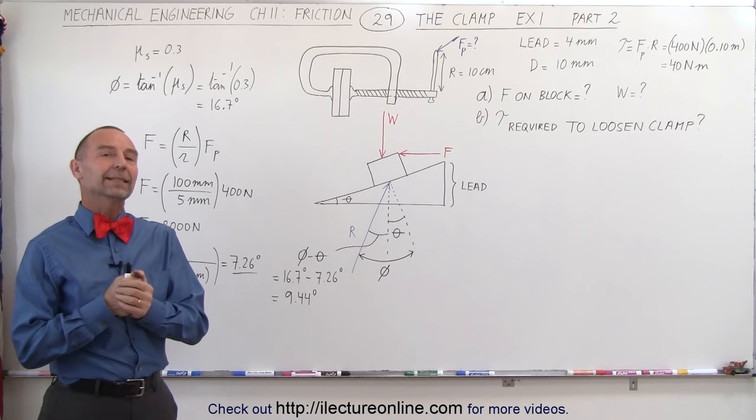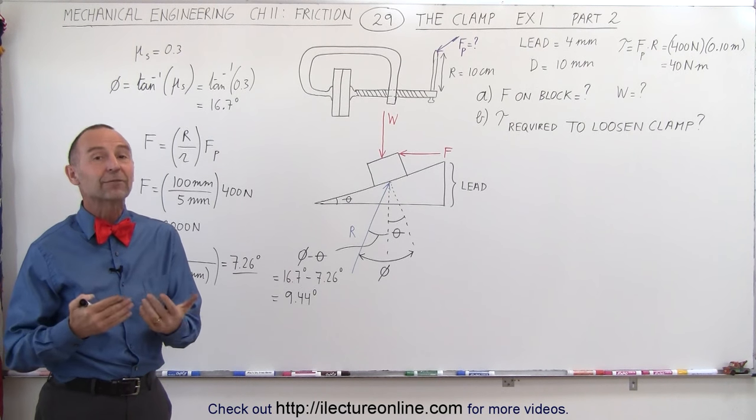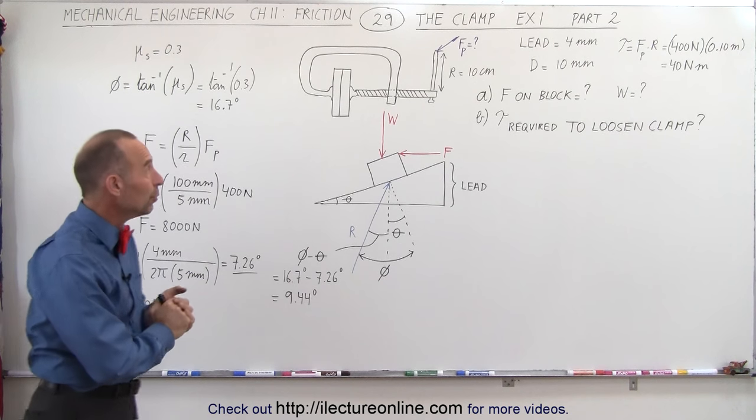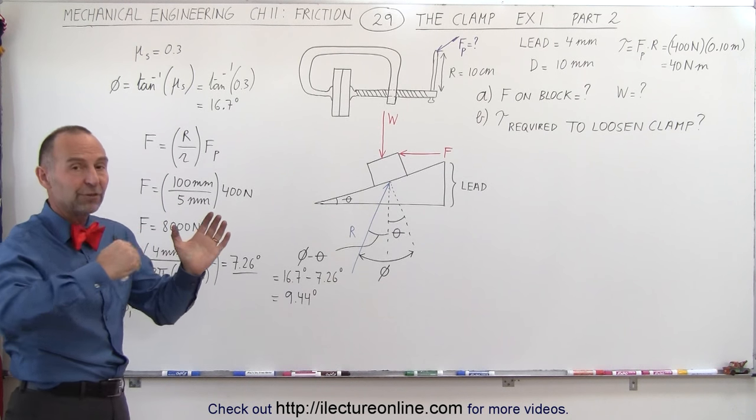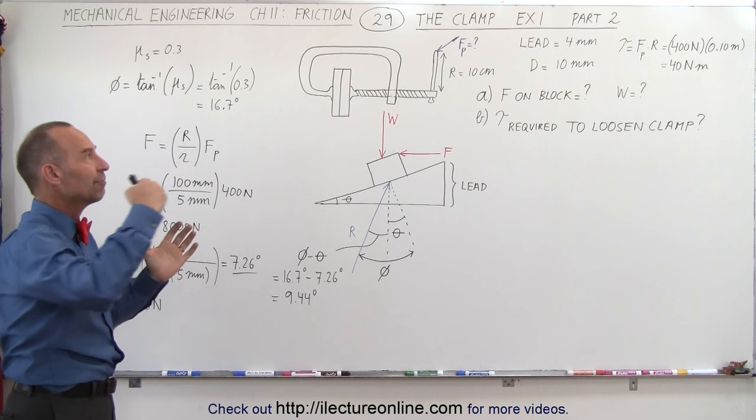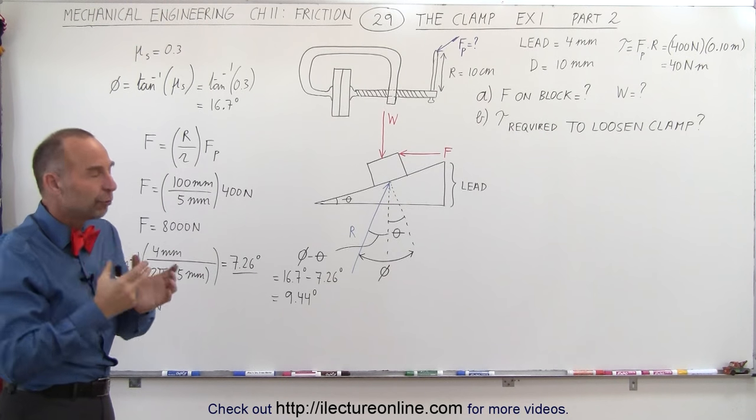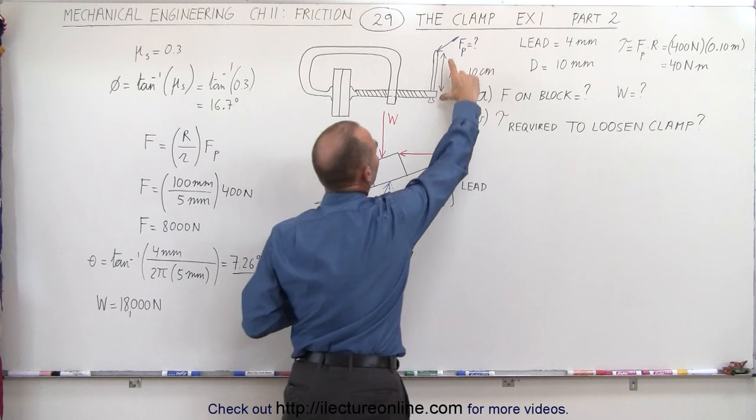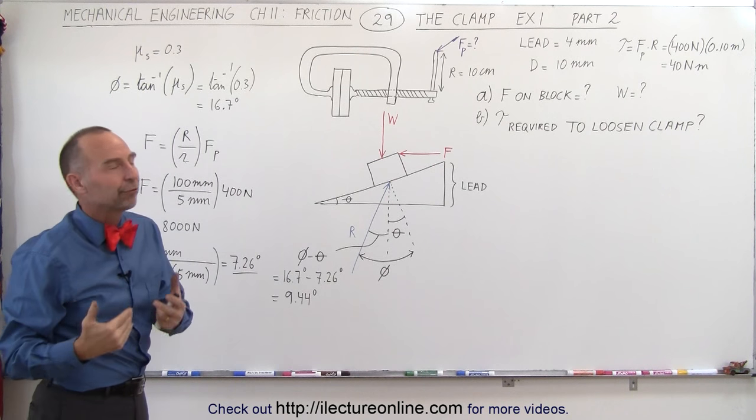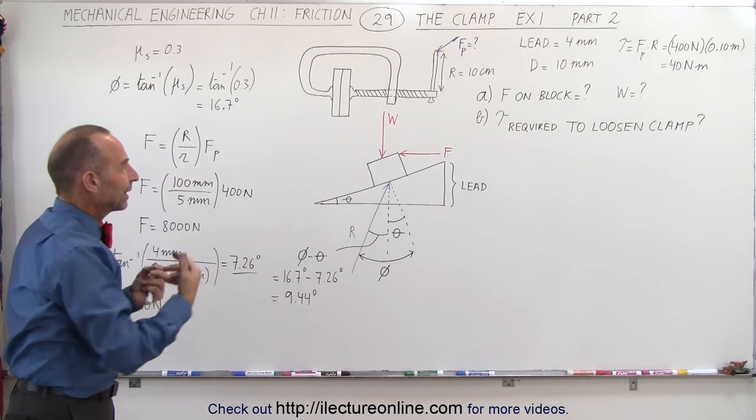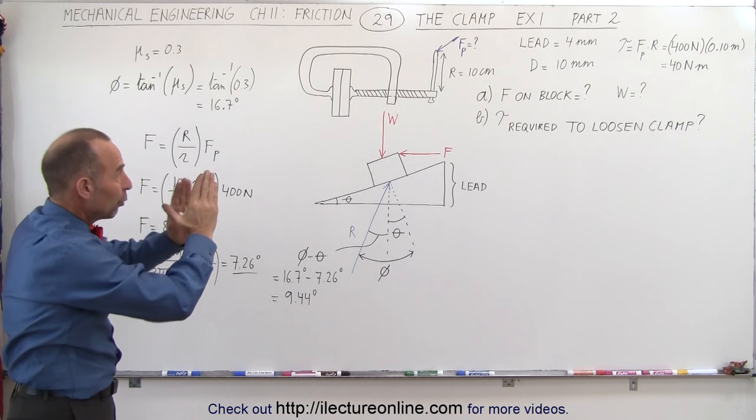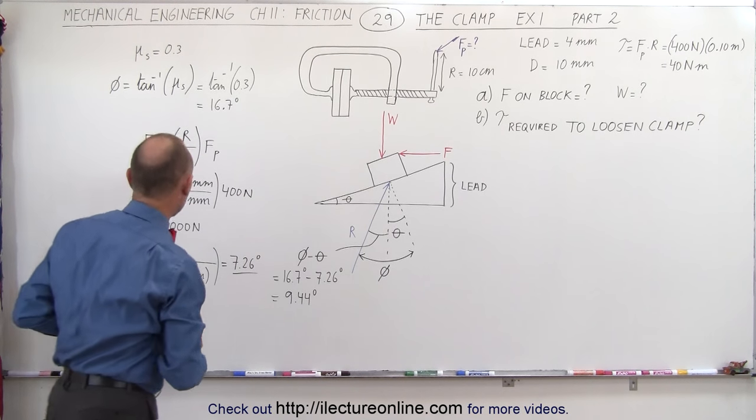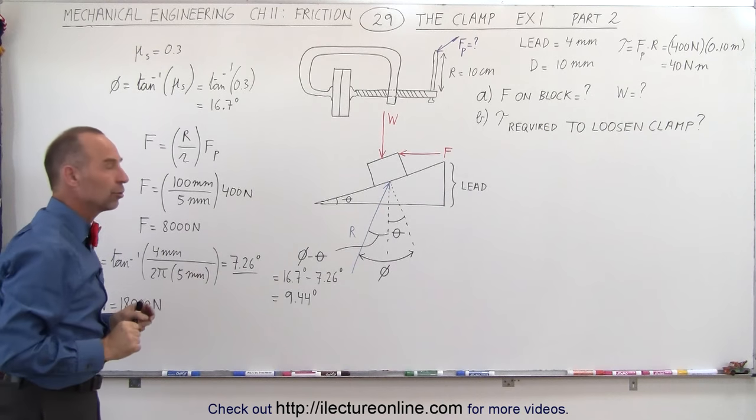Welcome to ElectronLine. Now let's do part B of the problem we started in the previous video. We have a clamp. In the previous video we tightened the clamp with a 400 Newton force applied to a 10 centimeter moment arm, which created a torque of 40 Newton-meters. This resulted in a clamping force of 18,000 newtons keeping the two blocks together.